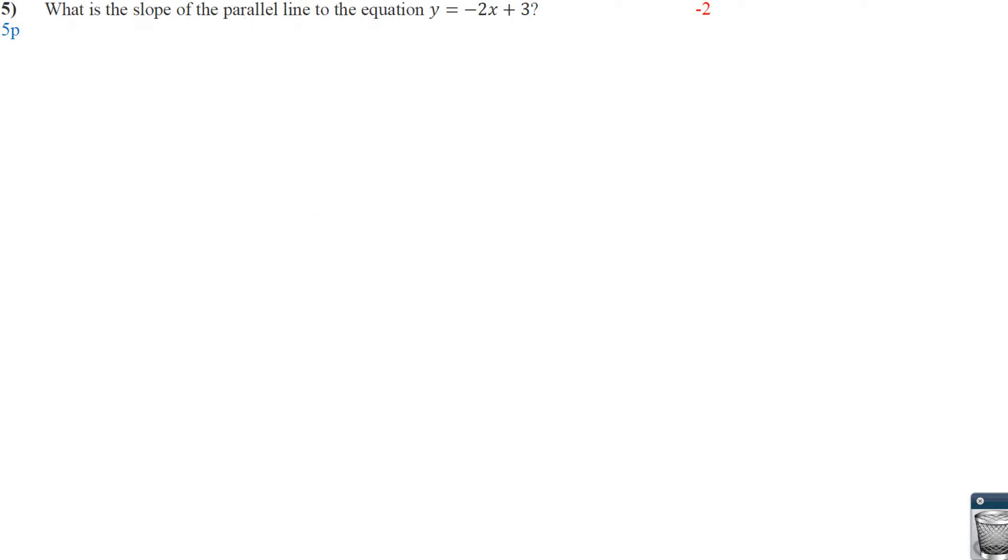So if we want to do a parallel line, luckily we can see that this is in slope-intercept form. So the slope is 2. So for it to be parallel, it needs to be the same. Sorry, I forgot the negative. Number 6. We want to do the perpendicular. So here we know that the slope is negative 2.